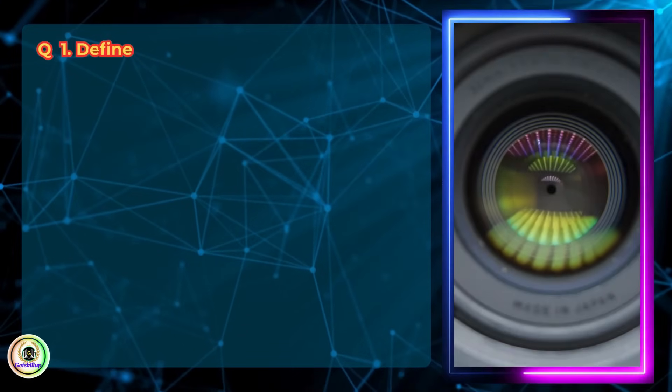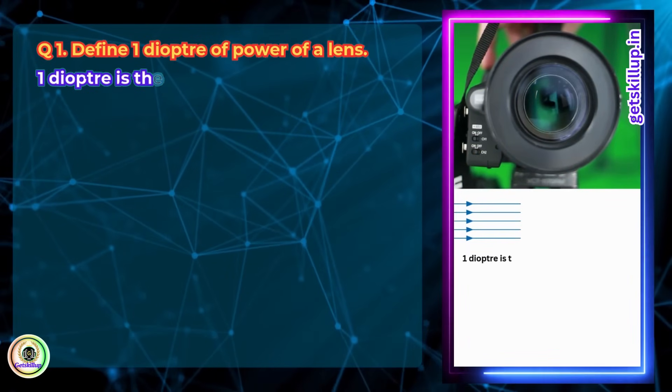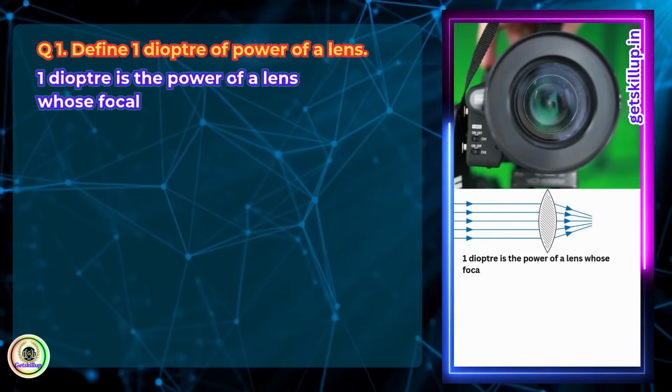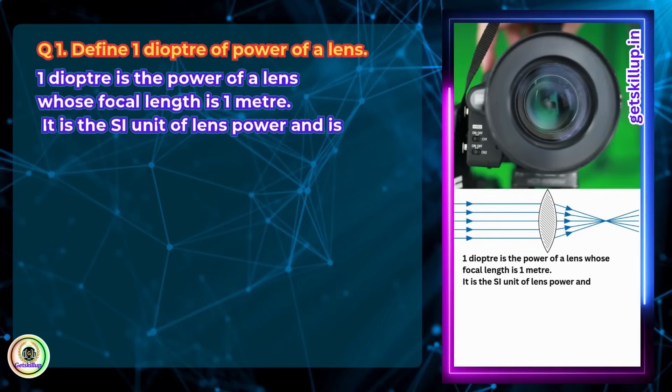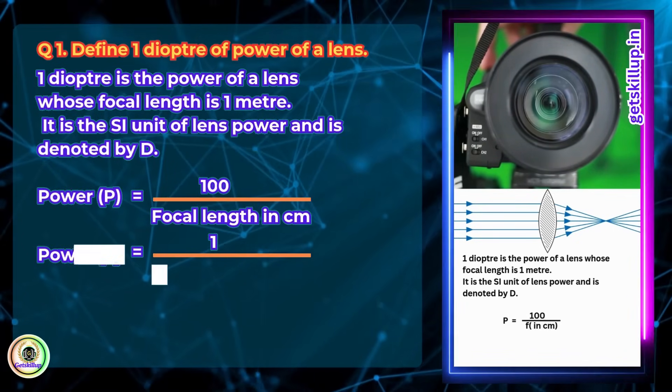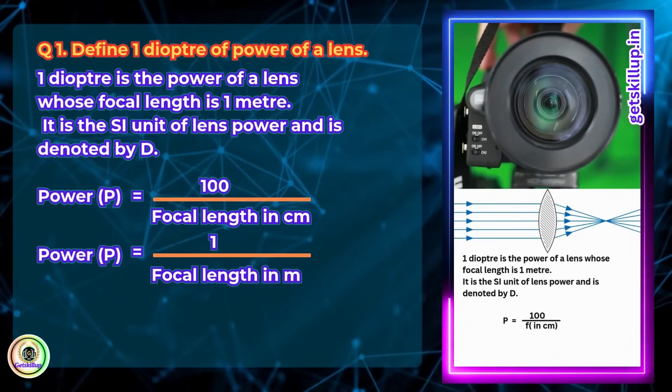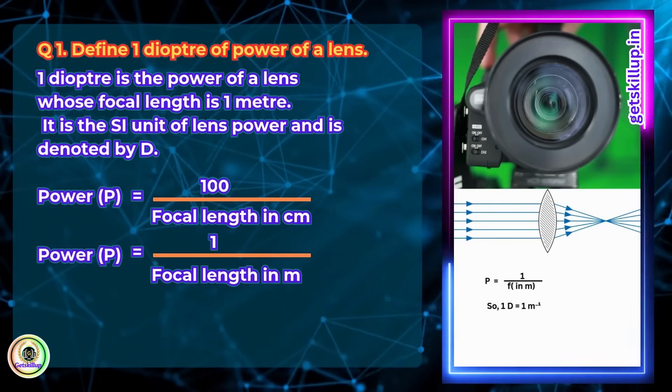Question 1: Define 1 diopter of power of a lens. One diopter is the power of a lens whose focal length is 1 meter. It is the SI unit of lens power, denoted by D. Power P = 100/f (in cm) = 1/f (in m). So 1D